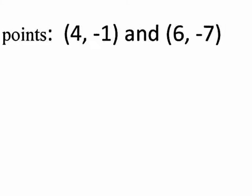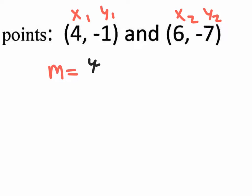We're going to find the slope of these points using the slope formula. I'm going to label them x1, y1, x2, y2. Now that we've labeled them, we need to know the actual slope formula, which is m equals y2 minus y1 over x2 minus x1.